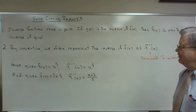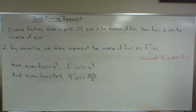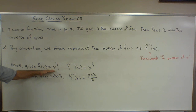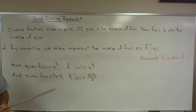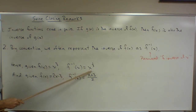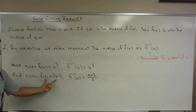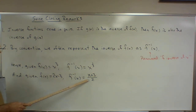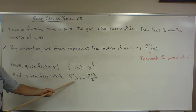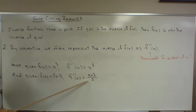Just to give some relevance to this notation in light of our preceding examples: we looked at f of x equals x cubed and found that its inverse was x to the 1/3, so f inverse of x is x to the 1/3. We also looked at f of x equal 2x minus 3, and its inverse was x plus 3 over 2, so f inverse of x is x plus 3 over 2.